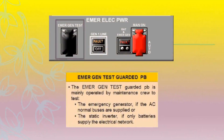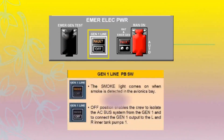The emergency generator test guarded pushbutton is mainly operated by maintenance crew to test the emergency generator if the AC normal buses are supplied, or the static inverter if only batteries supply the electrical network.